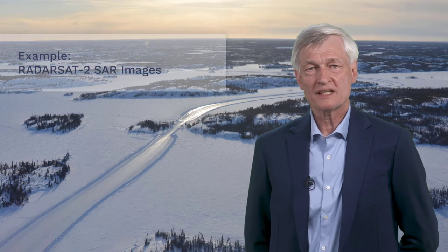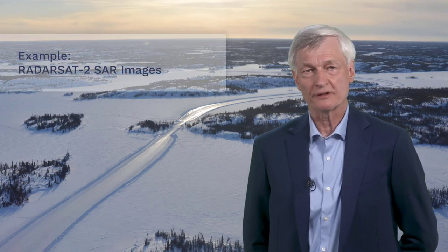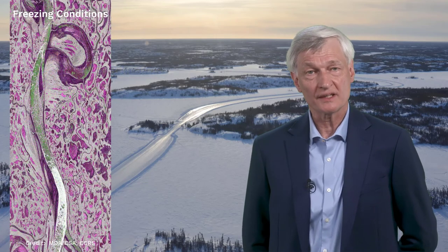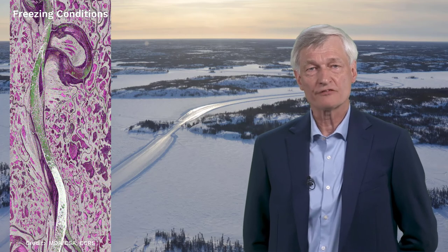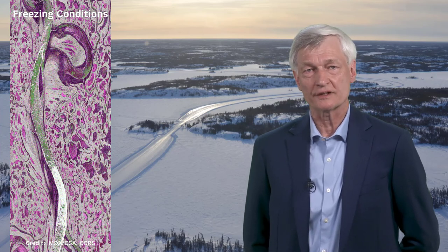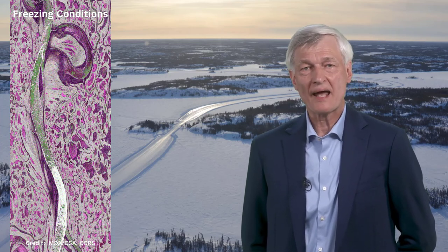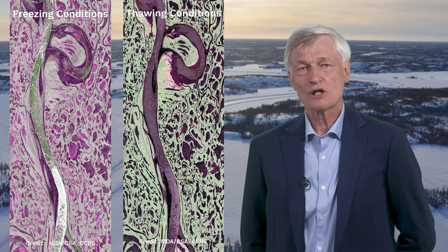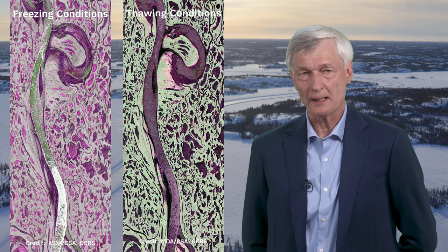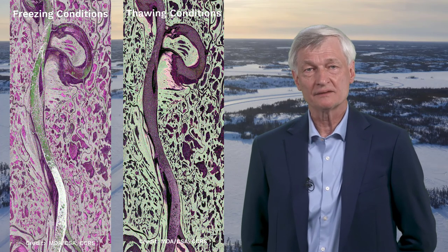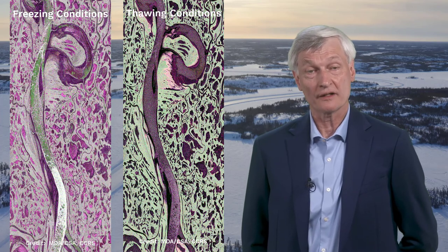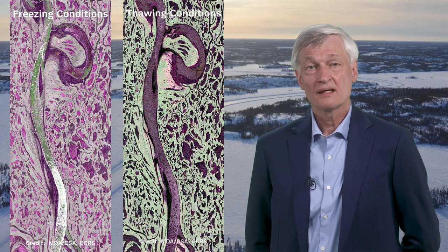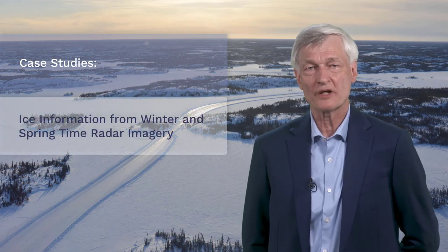Let's have a look at these two multipolarization Radarsat-2 images to illustrate this point. The image on the left was acquired under freezing conditions. It appears to contain a relatively large amount of ice cover information, because areas occupied by lakes and rivers display a wide range of colors, from grey to purple to green to white. In contrast, the color palette in the right-hand image is rather narrow, because ice-covered areas are mainly represented in black or shades of grey. This indicates a lack of ice cover information, which can be explained by the fact that this image was acquired during thawing conditions. The case studies that follow will demonstrate what types of freshwater ice cover information can be derived from winter and springtime radar images.